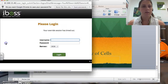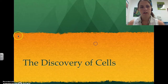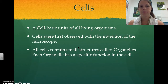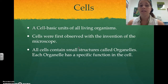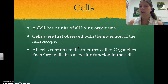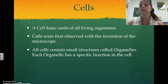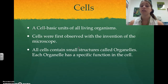We are going to really quickly talk about the discovery of cells. A cell is the basic unit of all living things. So if it's a unicellular organism, it is a cell. If it is a multicellular organism, it's made of cells. So it's basically the smallest unit of life.